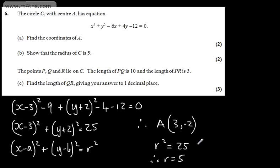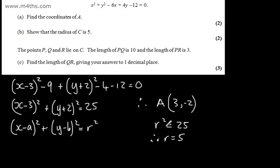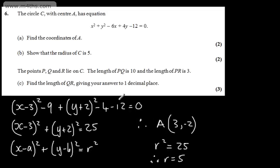So we've done two parts in one. In part A we found the coordinates by putting it in completed square form, and in part B we've shown that in this form this is the radius squared, therefore the radius is 5.